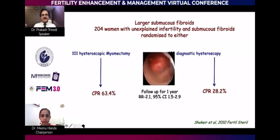Cumulative pregnancy rate, if fibroids were left inside, was far lower. After fibroid removal, you can have a 63 to almost 70% pregnancy rate. These pregnancies are quite often spontaneous if other factors are normal.